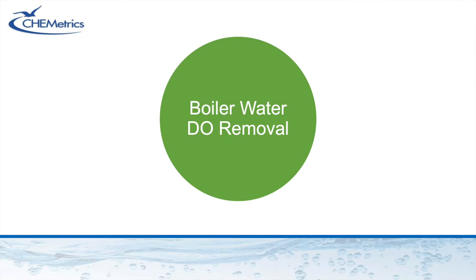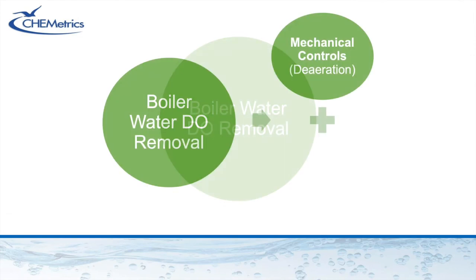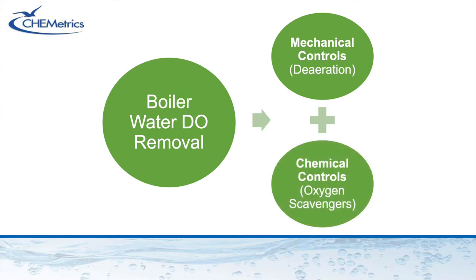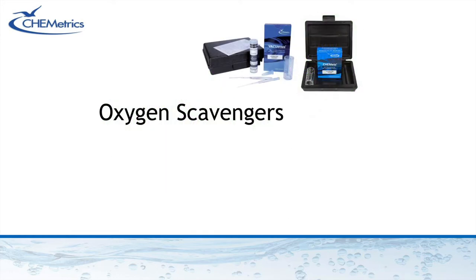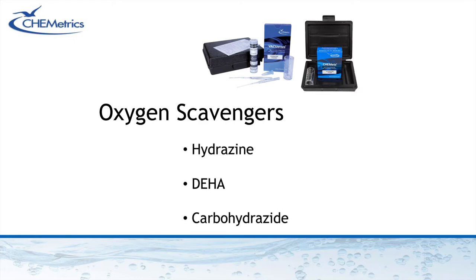There are two primary methods that boiler operators use to reduce dissolved oxygen: mechanical controls and chemical controls. Mechanical de-aeration, commonly the first and most economical technique, can reduce DO levels down to around 10 parts per billion. Plant operators can also employ chemical treatment using oxygen scavengers like hydrazine, DEHA, and carbohydrazide to consume the remaining DO, and Chemetrix offers tests for these analytes.